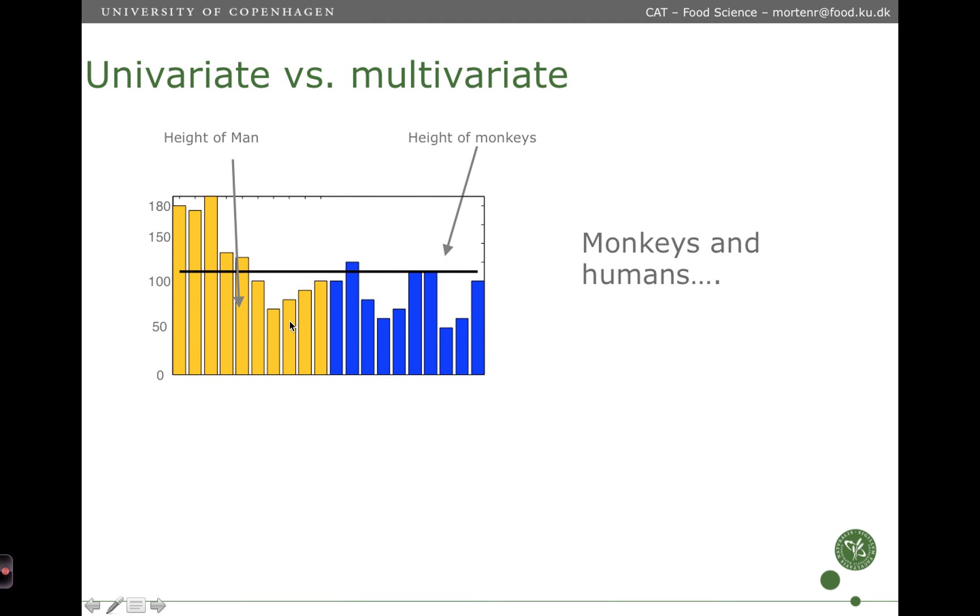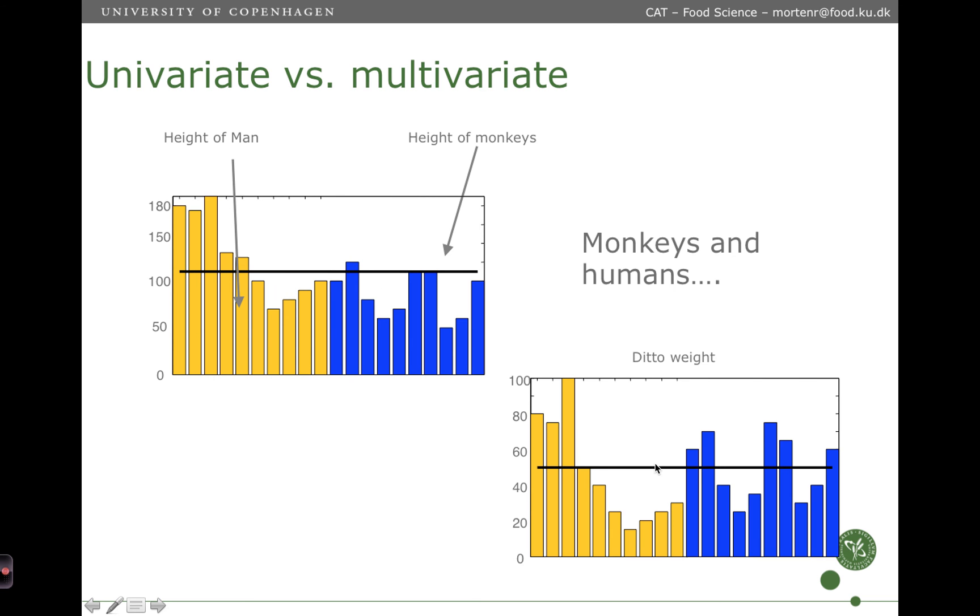So here's another example where we try to use a univariate measure, the height of man and monkeys, to separate the two. And what we see is that it's hard to separate the two just based on height. There's a tendency that men are higher than monkeys, but there's still some men which are lower than the highest monkeys. If you do the same for weight, say, well, height didn't work, then let's try another one. Let's try weight. We'll see that we find exactly the same pattern. There's a tendency to the men being a little more heavier than the monkeys, but then again, it's not totally well separated. We have these two variables and we can see that none of them alone is enough.